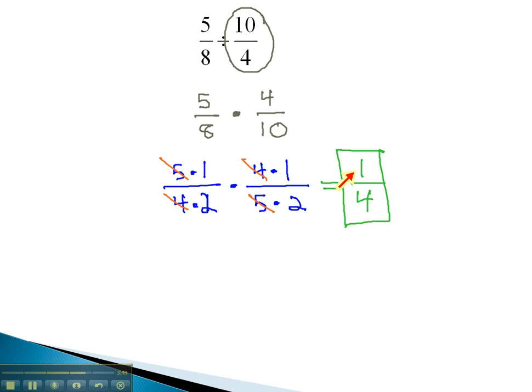To multiply and divide fractions, we follow a very simple process. If it's division, we multiply by the reciprocal, and then we find common factors we can divide out. Finally, we multiply across.